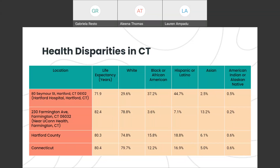We also see life expectancy based on racial and ethnic identity. When we look at life expectancy across the board, we see that there's a general 10-year gap in life expectancy based on specific locations. This gap is most evident when we consider the Hartford location near Hartford Hospital and the Farmington location near UConn Health. Although these two addresses are only 15 minutes away from each other, there's a nearly 10-year difference in life expectancy. And these life expectancies also correlate with the proportions of racial and ethnic groups in these communities.